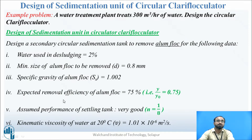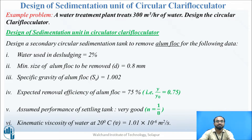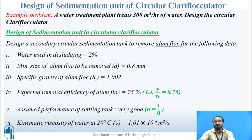Expected removal efficiency of alum flock is 75 percent, i.e., Y by Y-naught equals 0.75. Assumed performance of the settling tank is very good, so N is taken as 1 by 8 (for good condition it would be 1 by 4). Kinematic viscosity of water at 20 degrees Celsius is taken as nu = 1.01 × 10⁻⁶ m²/s.